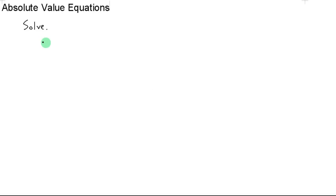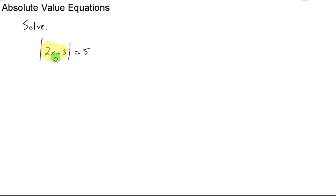I'm going to take an example such as the absolute value of 2x plus 3 equals 5. The idea is I'm trying to solve for x, and this yellow guy here — when you take the absolute value of the yellow guy, you should get 5. So it makes sense that the yellow guy, 2x plus 3, could be 5.